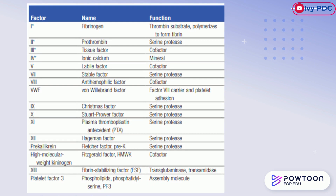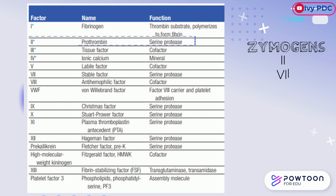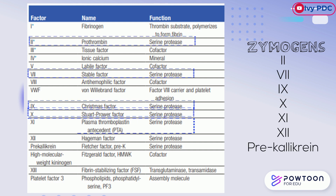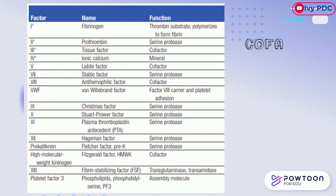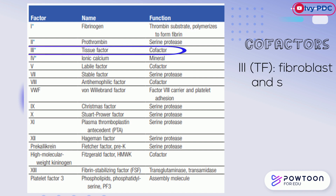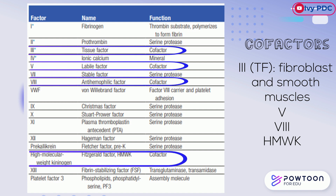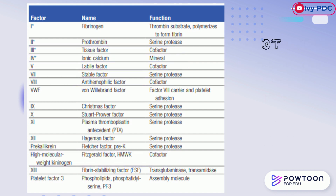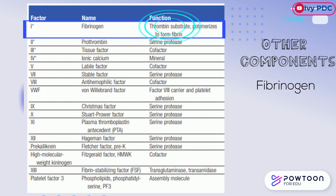Here is a list of all the factors with their other given names. Zymogens include factors 2, 7, 9, 10, 11, 12, and pre-kallikrein. The procoagulant cofactors that participate in complex formation are tissue factor, located in membranes of fibroblasts and smooth muscle cells, and soluble factors 5, 8, and high molecular weight kininogen. The remaining components of the coagulation pathway are fibrinogen, which is a thrombin substrate.